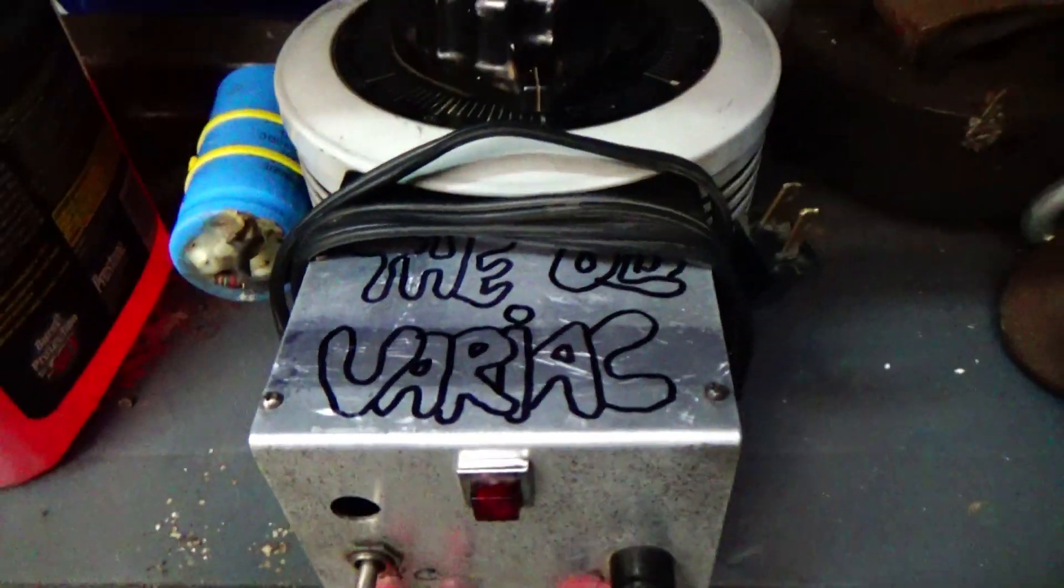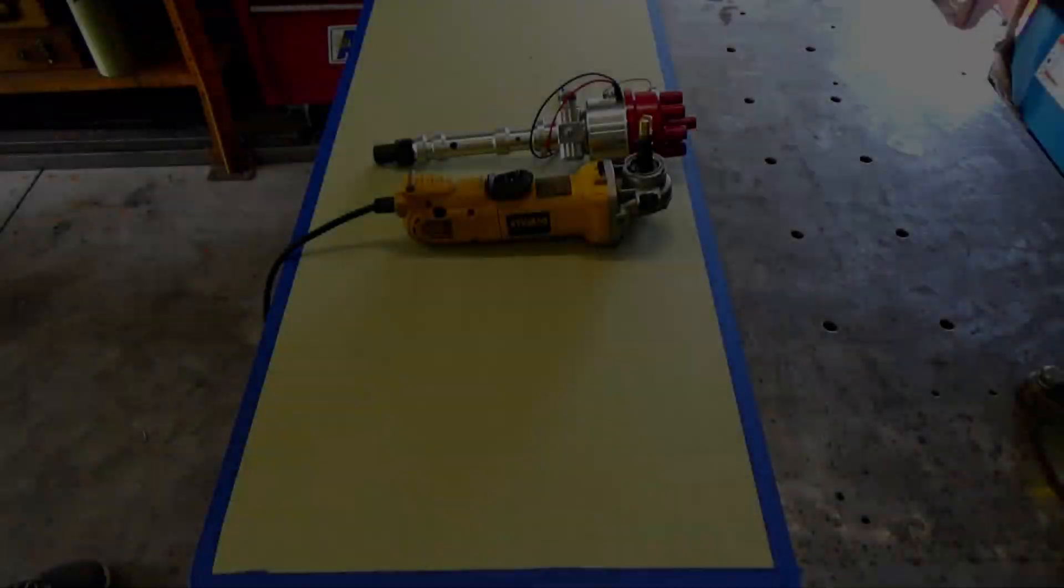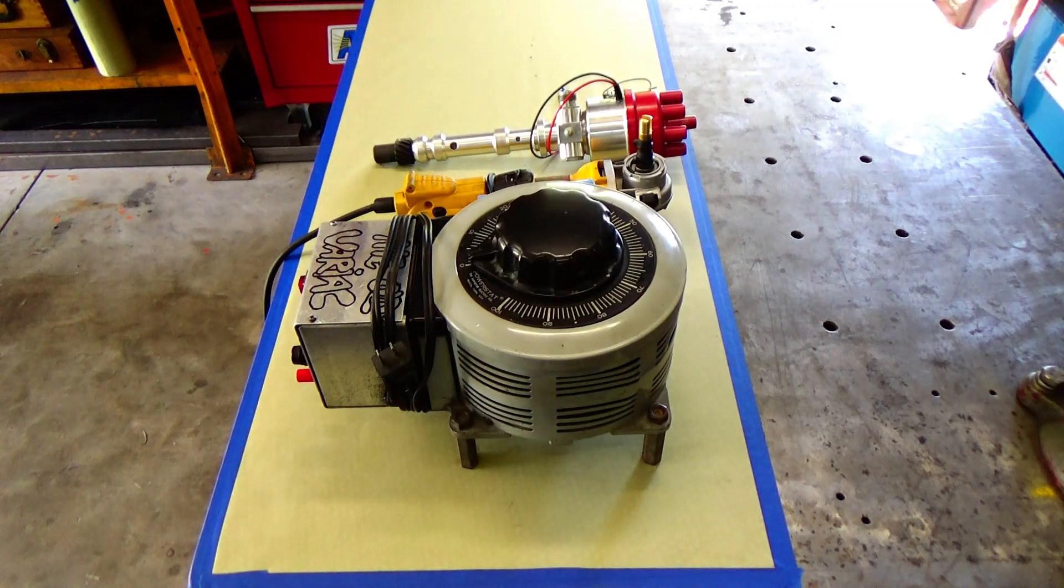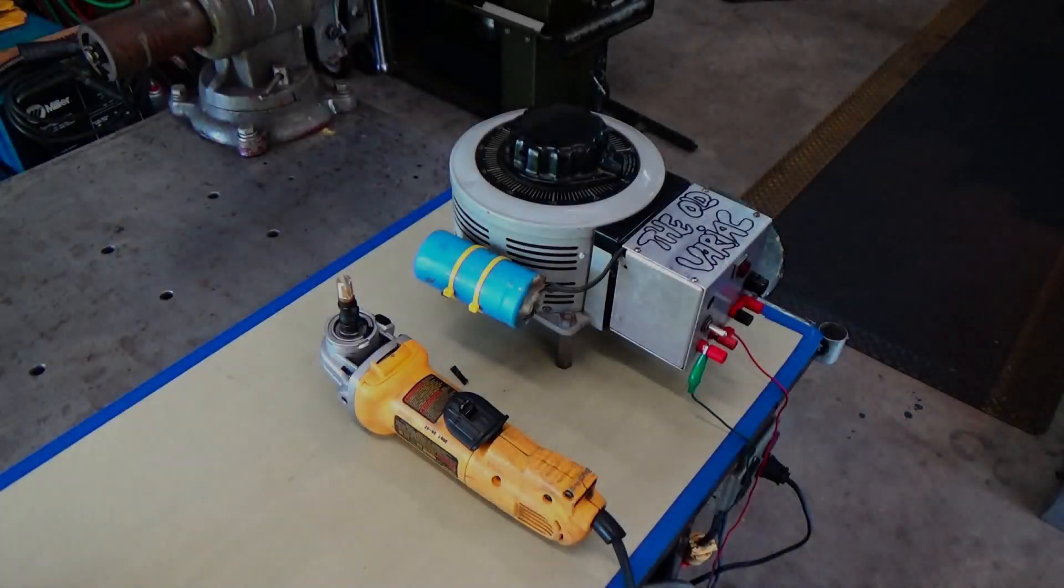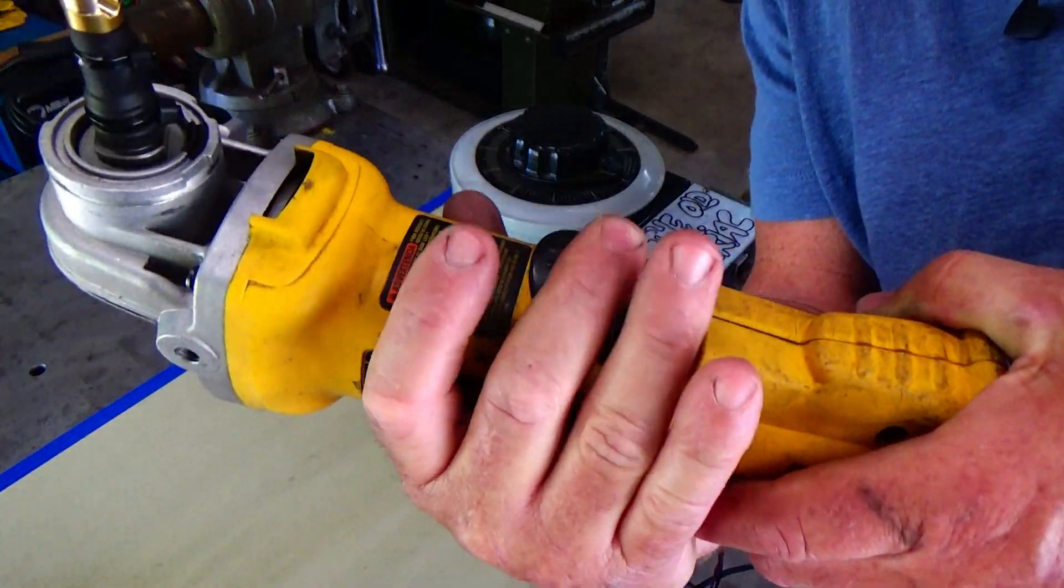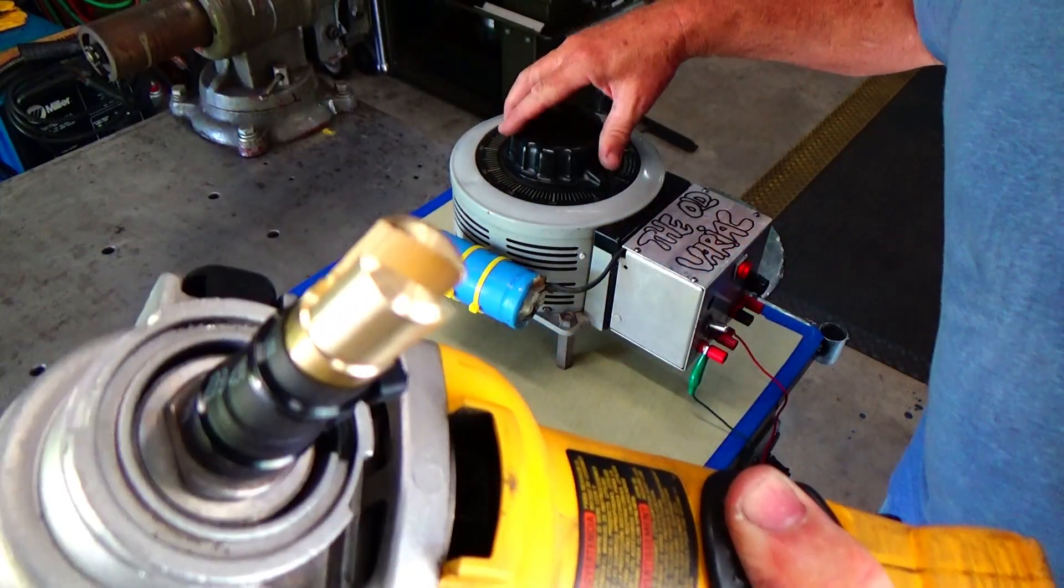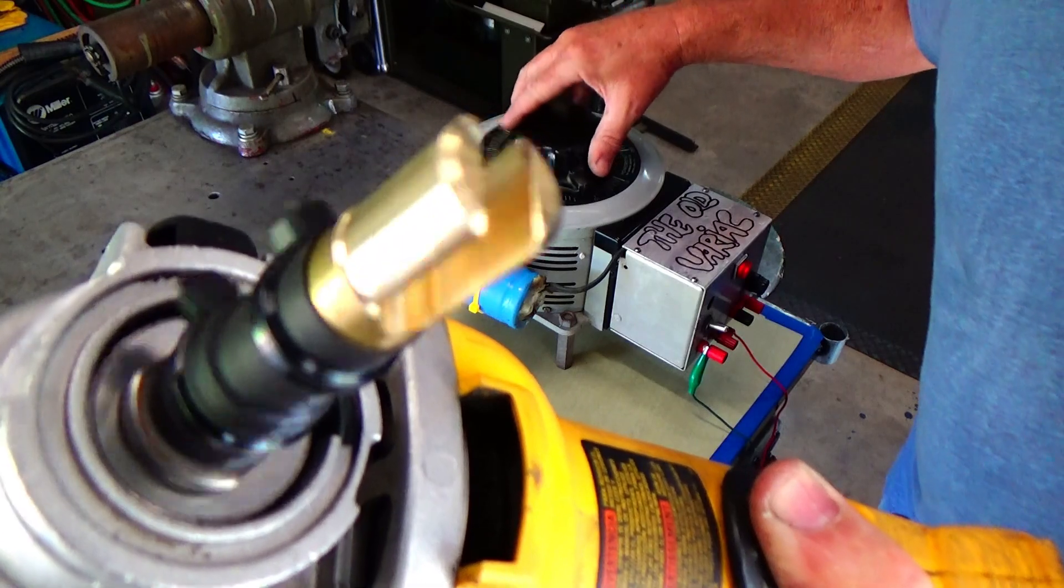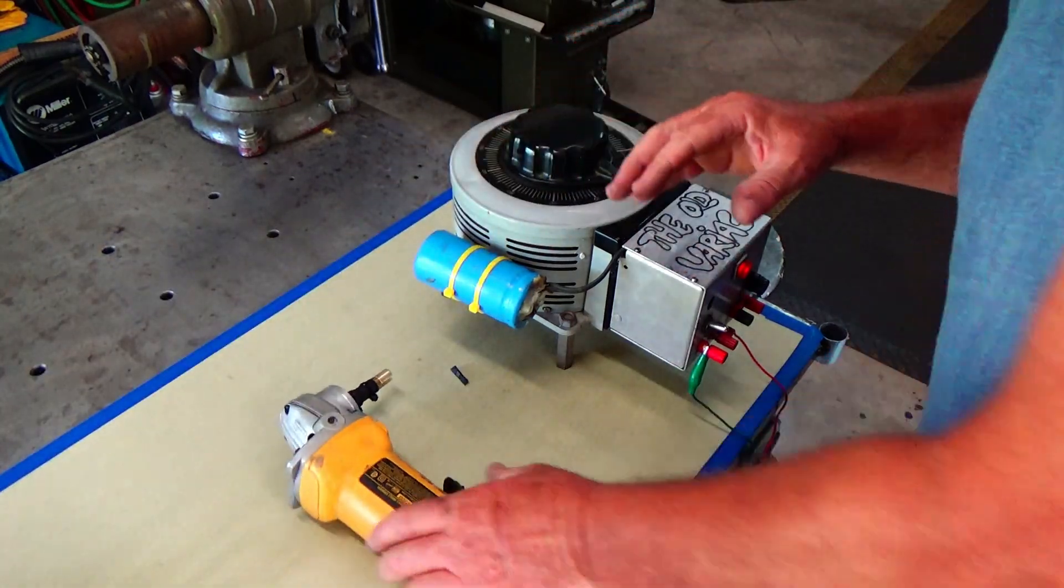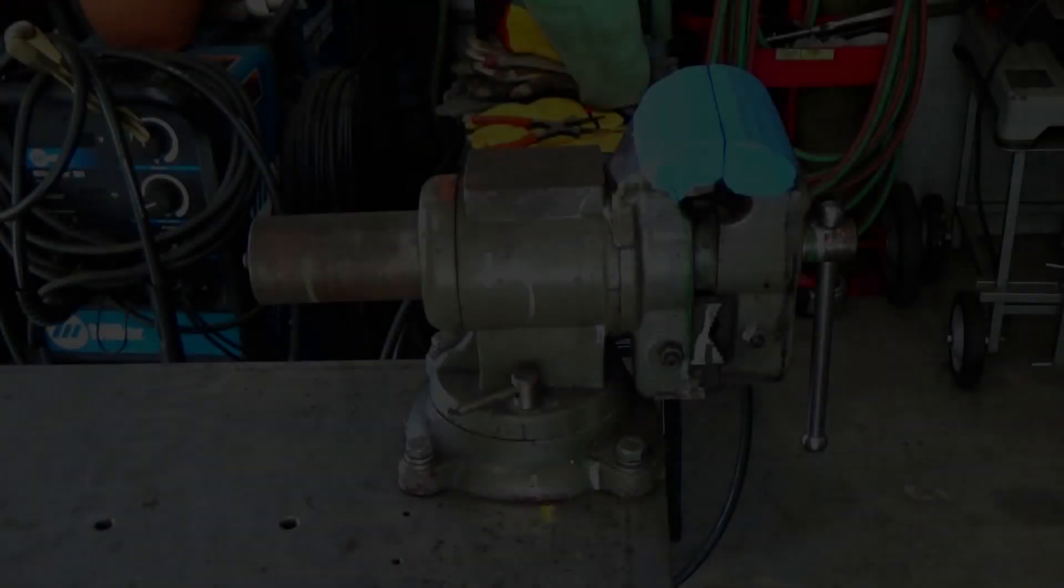Alright, so now I need a way to control that side grinder to where I can make it spin different speeds as I go up in RPMs instead of just on and off. So with this Variac, I can control how fast the grinder spins.